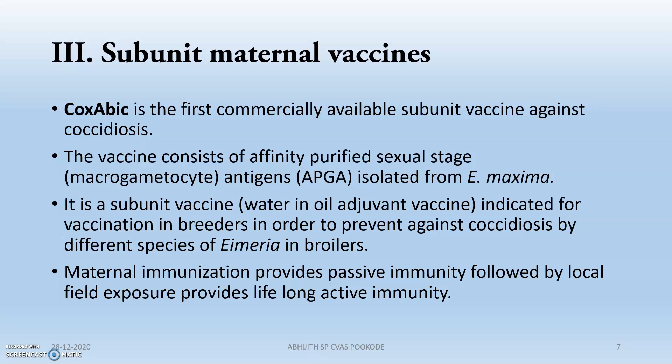Next is the subunit maternal vaccine. CoxAbic is the first commercially available subunit vaccine against coccidiosis. It contains purified sexual-stage antigens — that is, macrogametocyte antigens from the macrogametocyte stage of Eimeria maxima. Antibodies are produced against the macrogamete surface antigens of E. maxima. It is a subunit, water-in-oil adjuvant vaccine indicated for vaccination in breeders to prevent coccidiosis.